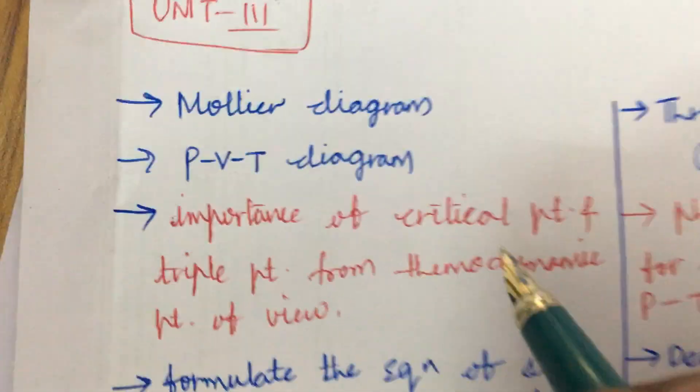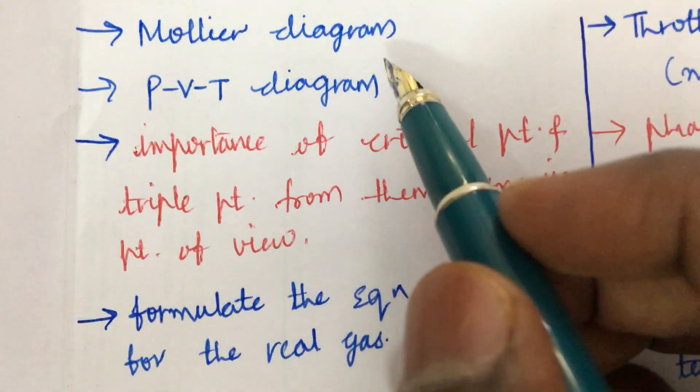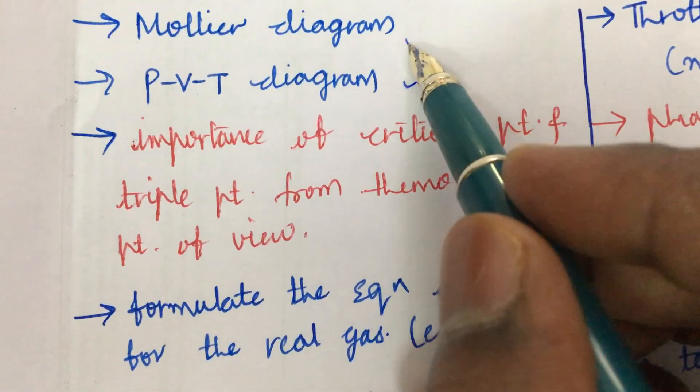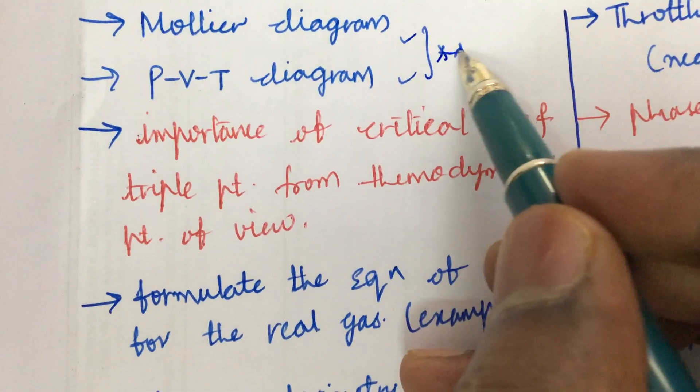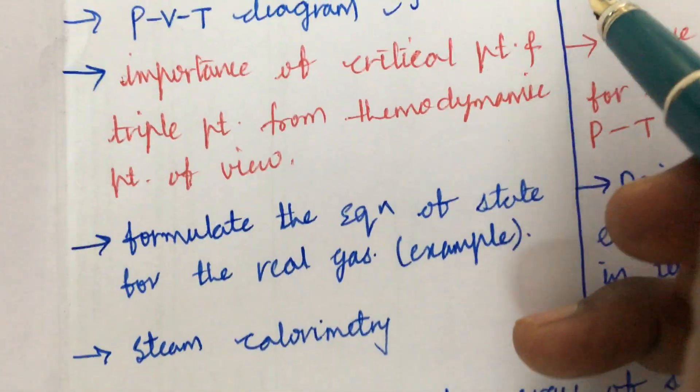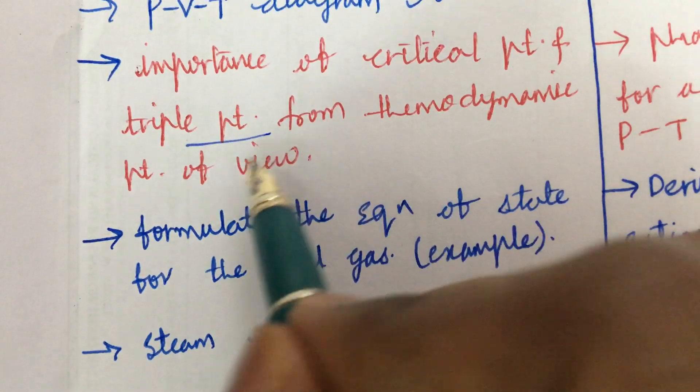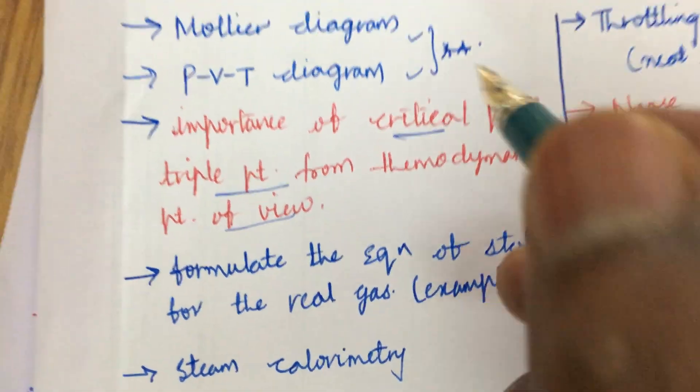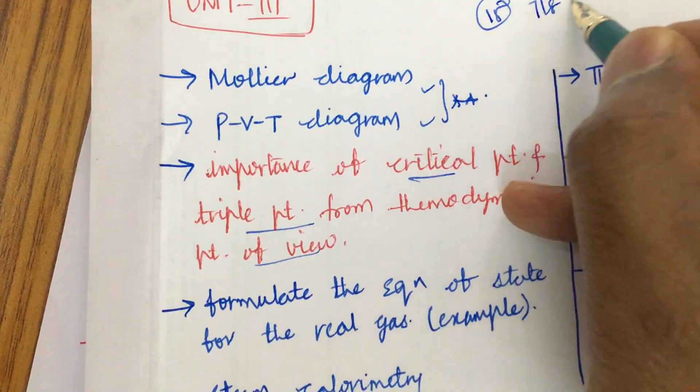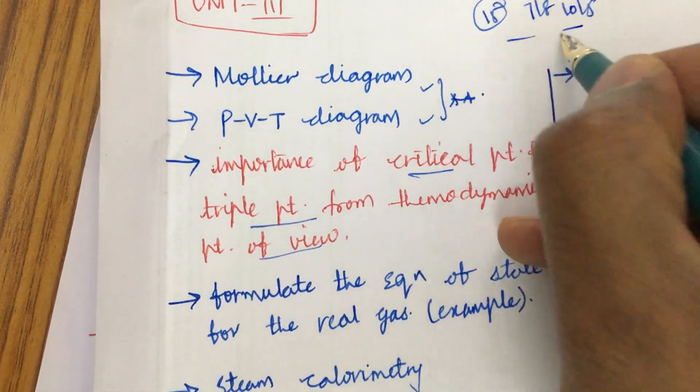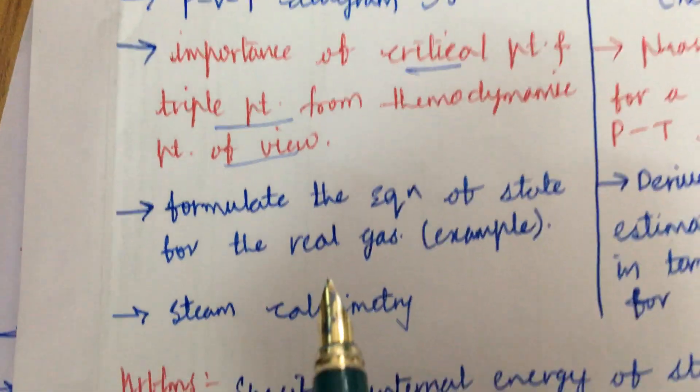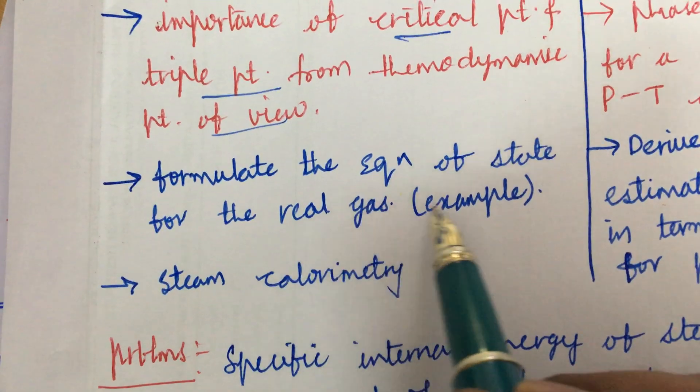Mollier diagrams as well as PVT diagram. From these two parts you will be getting one question for sure and that is 100 percent. The importance of critical point and triple point from the thermodynamic point of view. And do not expect direct 15 mark question here, that may be 7-8 or 10-5 combination, a-b split, dear students, throughout the equation paper.